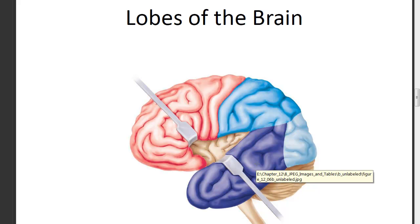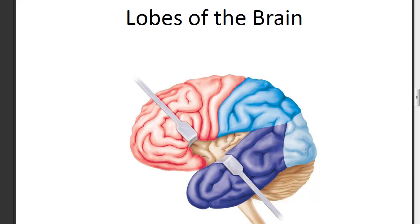Each of these lobes has a specific function. Neurons carrying information off the spinal cord through the nerves deliver information to specific lobes that have specific functions in the nervous system. We have the frontal lobe in pink, the parietal lobe behind the central sulcus, the occipital lobe in light blue, and the temporal lobe in purple. The lateral sulcus is found on the side of the brain on the superior margin of the temporal lobe.